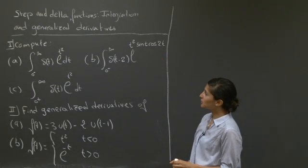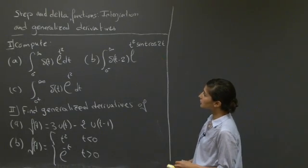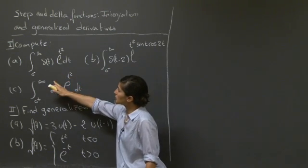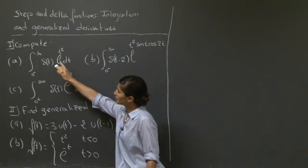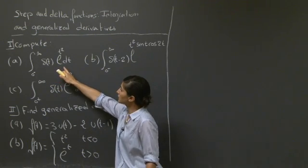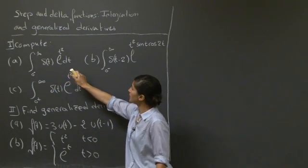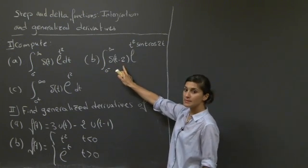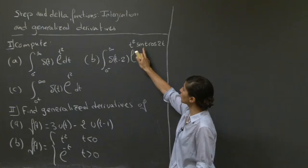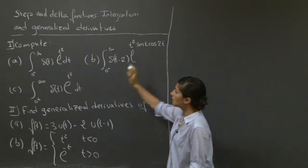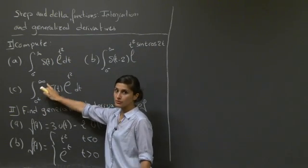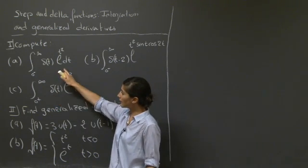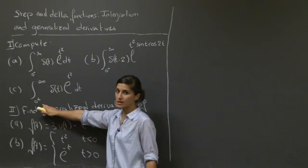In this recitation, we're going to look at step and delta functions, integration, and generalized derivatives. The first part asks you to compute the integral from 0 minus to infinity of δ(t)·e^(t²) dt. The second one is from 0 minus to infinity of δ(t-2)·e^(t²)·sin(t)·cos(2t) dt. The third one is from 0 plus to infinity of δ(t)·e^(t²) dt — the same as (a) except the bounds of integration changed.